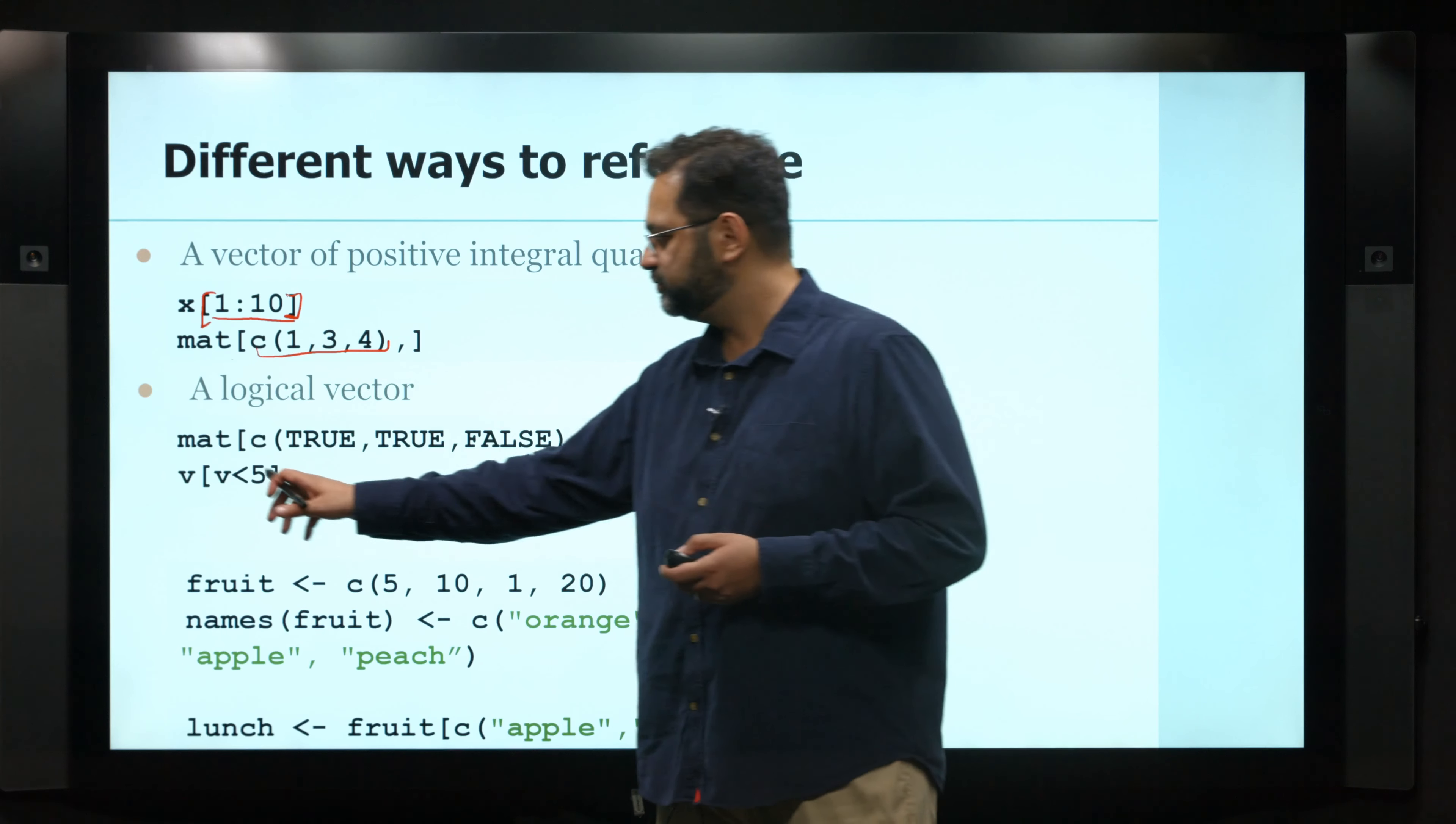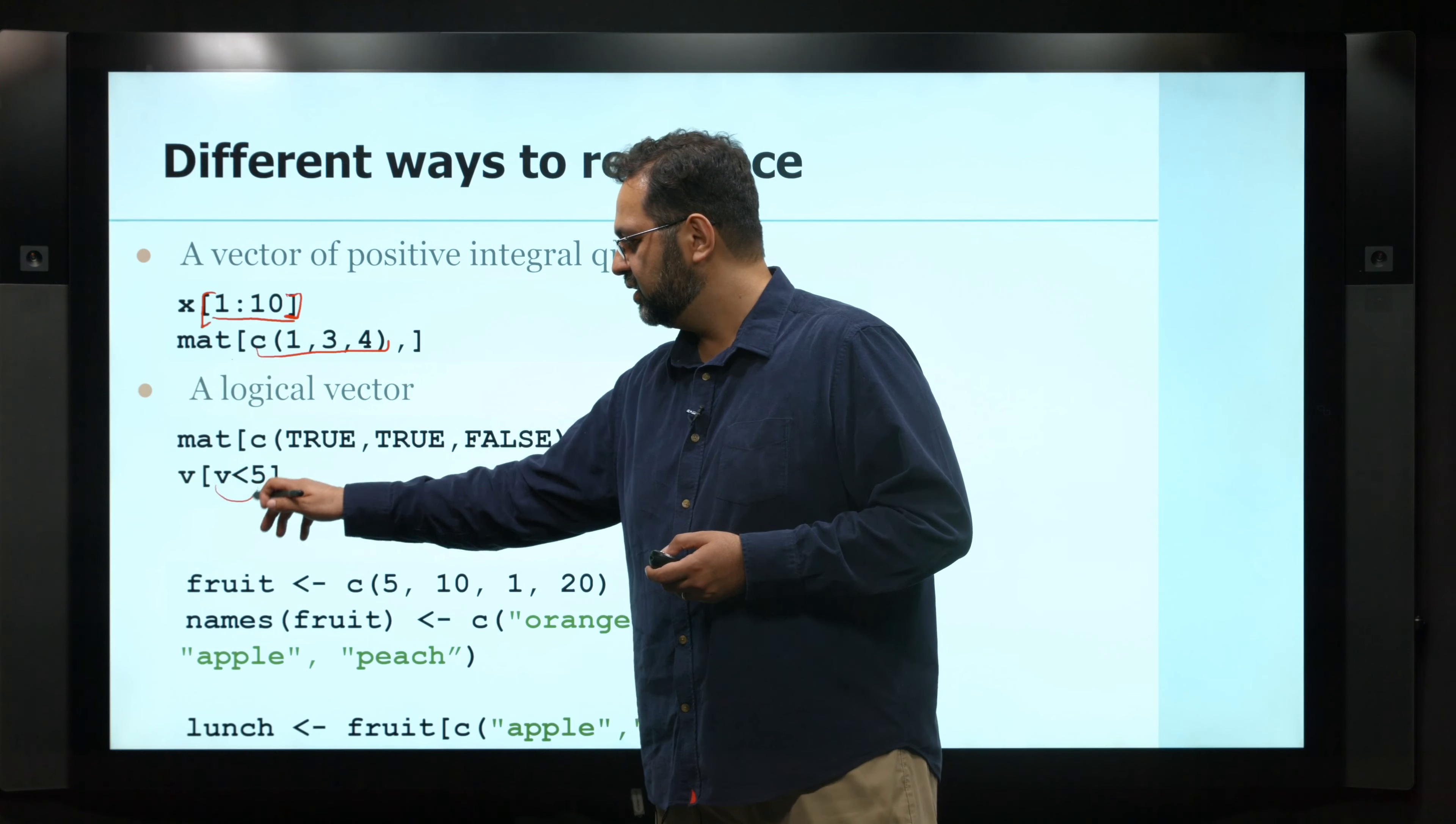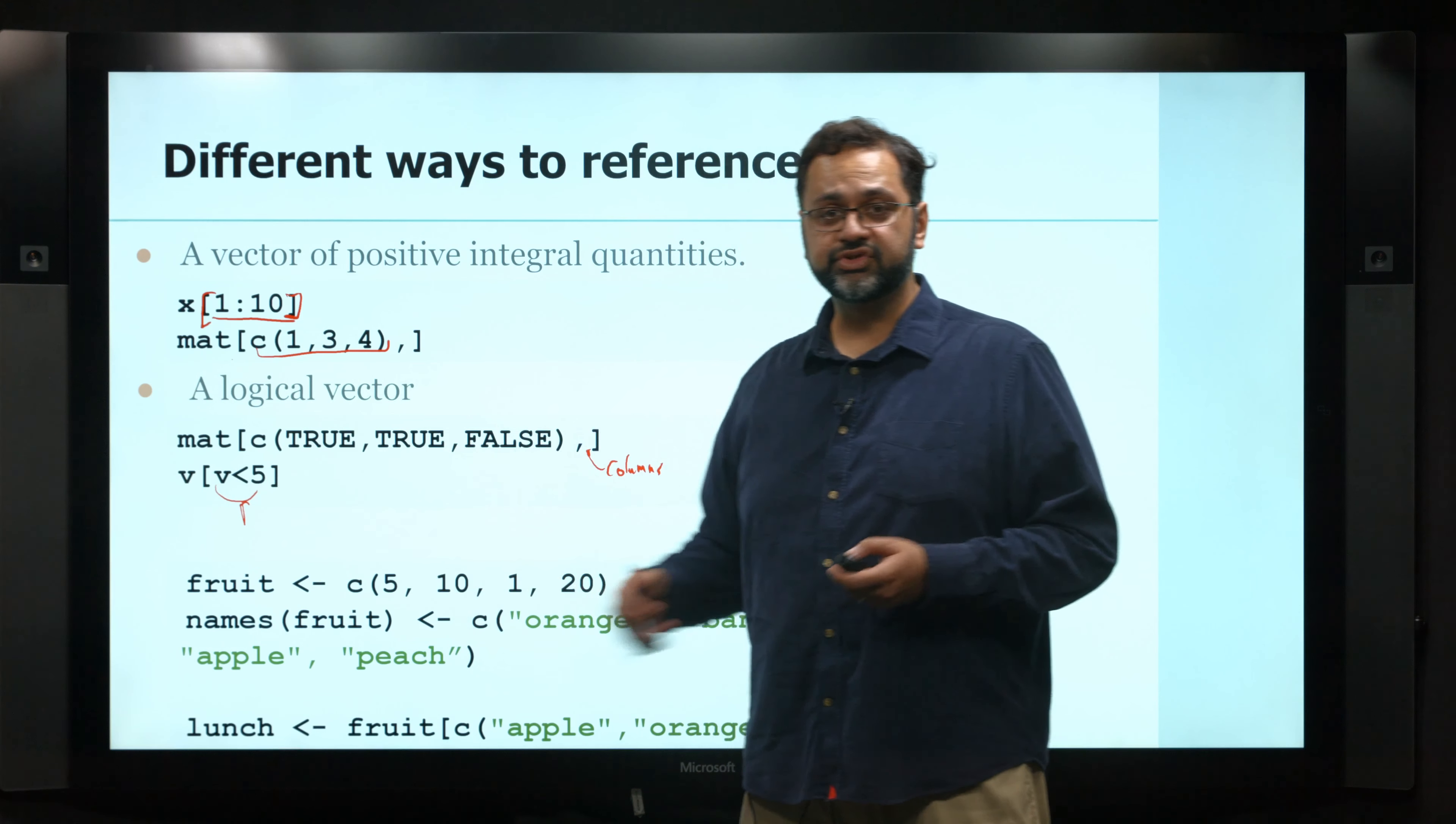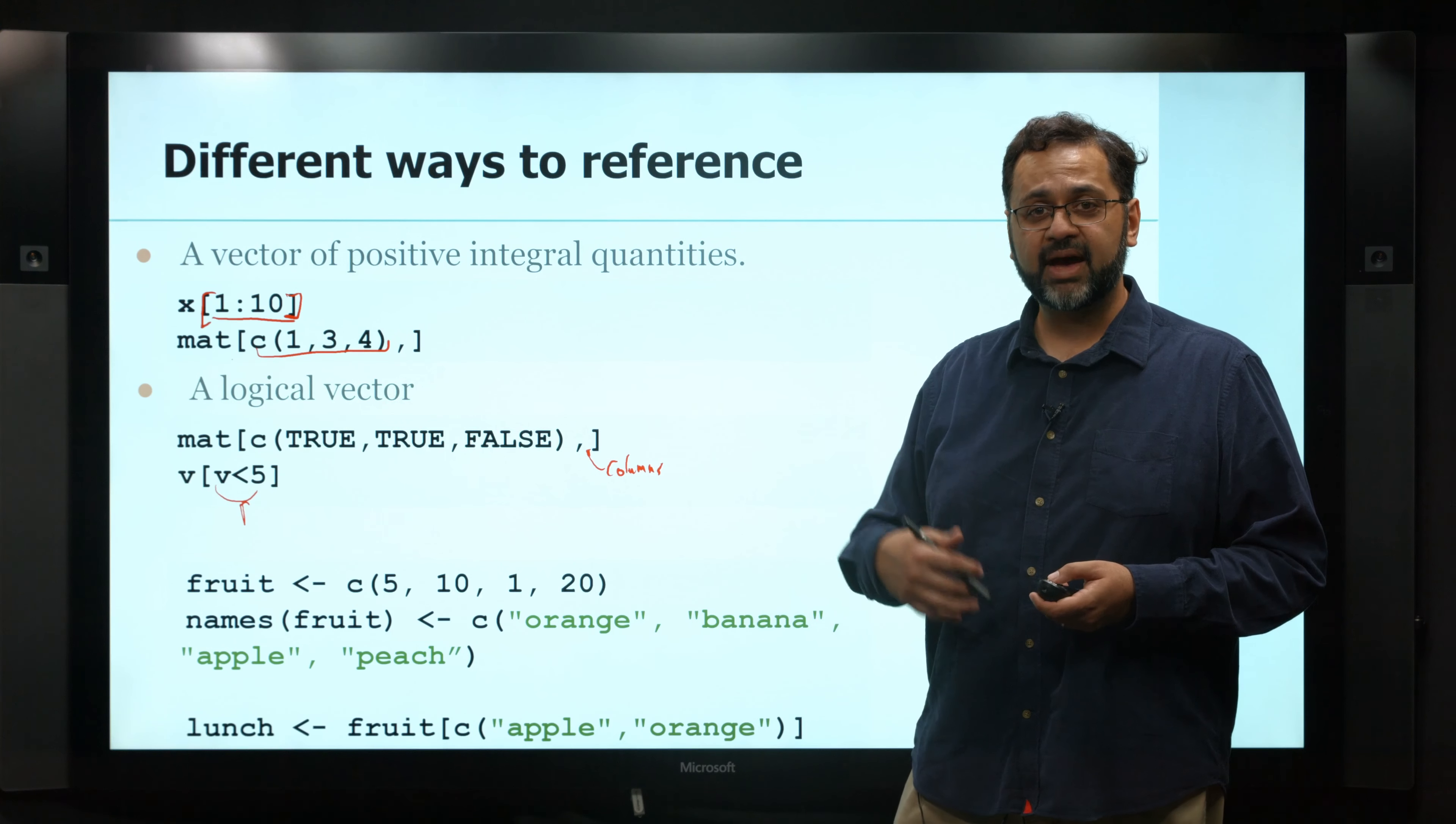And here, again, for a vector, I can give it a condition to tell me for whatever values are less than five, this would give me a series of trues and false, and every value that it's true will actually give me back that value.